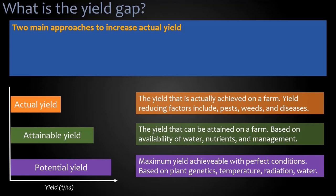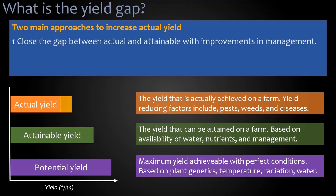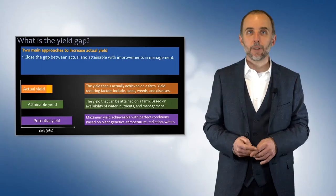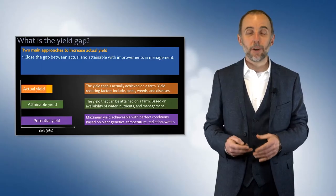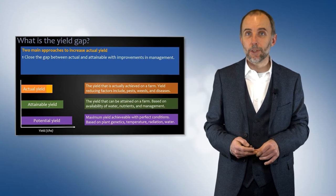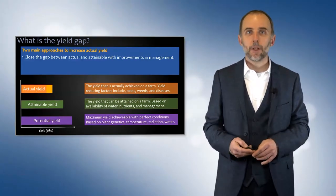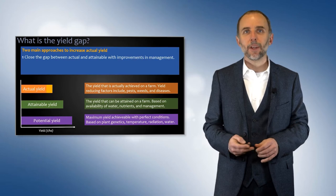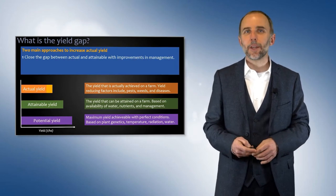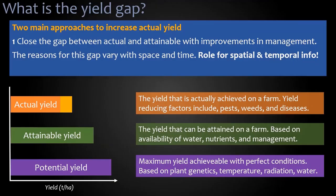There are two main approaches to increase actual yield. First is to close the gap between actual and attainable yield with improvements in management. We've been doing this year after year as we've been using more technology and gaining more knowledge about how to manage our agricultural systems. The light orange bar here gives an idea of the gains we could make. The reasons for this gap vary with space and time, so there's a role for spatial and temporal information to understand where those gaps are and what we can do to close them.